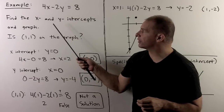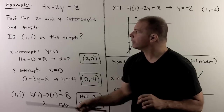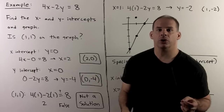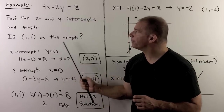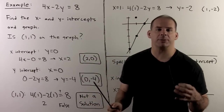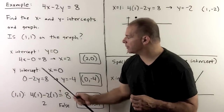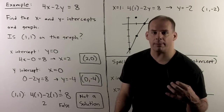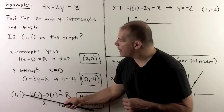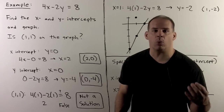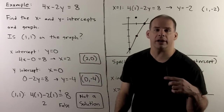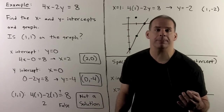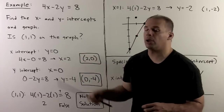For example, consider the line 4x minus 2y equals 8. For the x-intercept, set y equal to 0 and solve: x equals 2, so the x-intercept is (2, 0). For the y-intercept, set x equal to 0 and solve: y equals -4, so the y-intercept is (0, -4). To check whether (1, 1) is on the graph, substitute: 4 minus 2 equals 2, not 8 — that's false, so (1, 1) is not a solution and not on the graph.